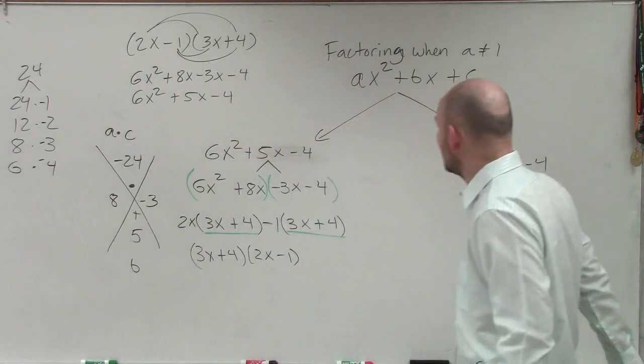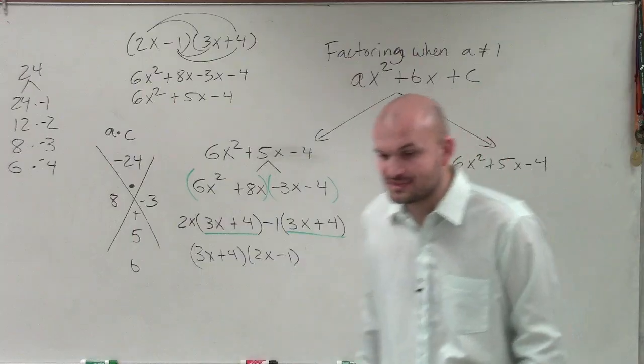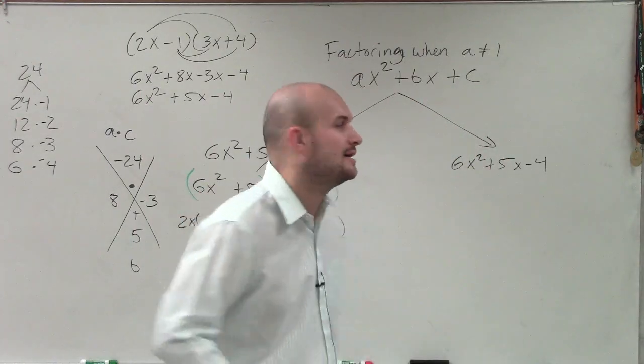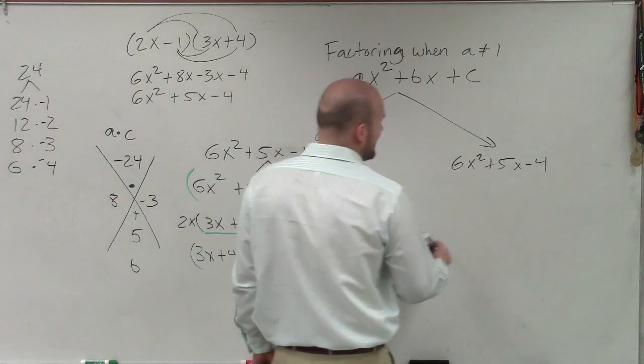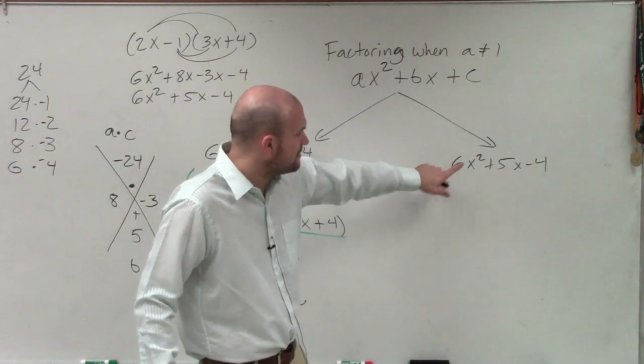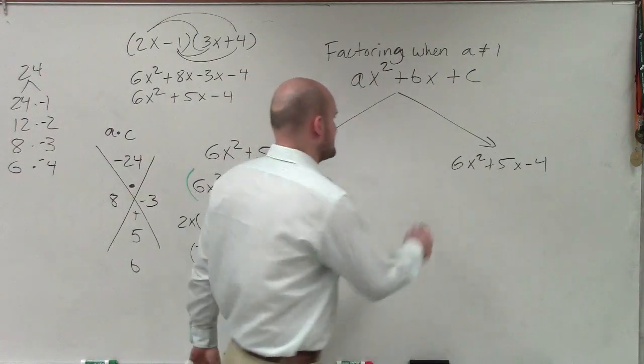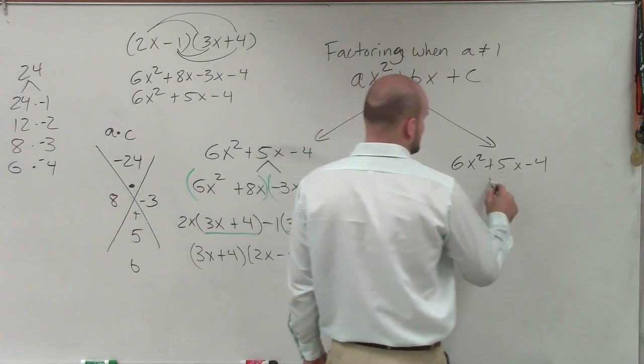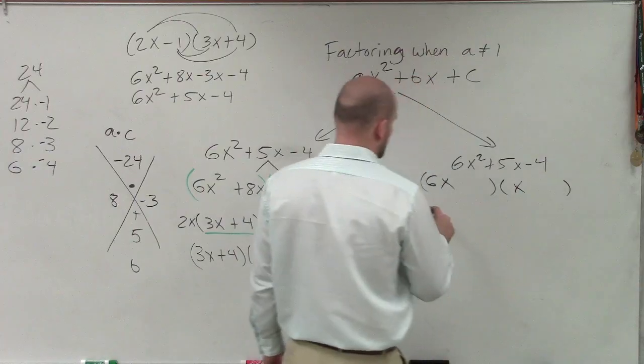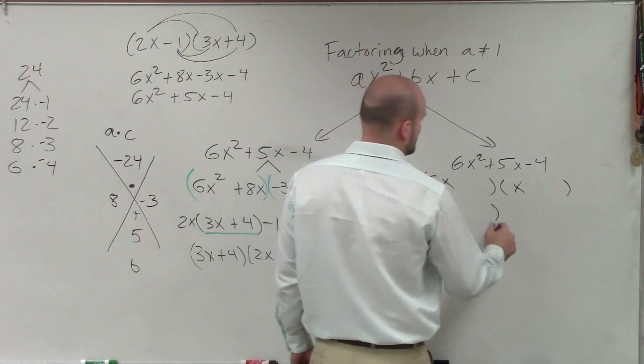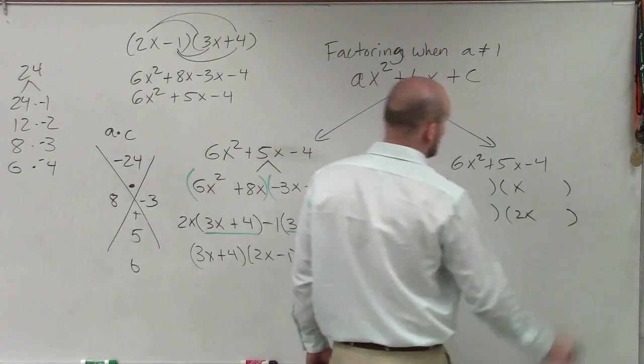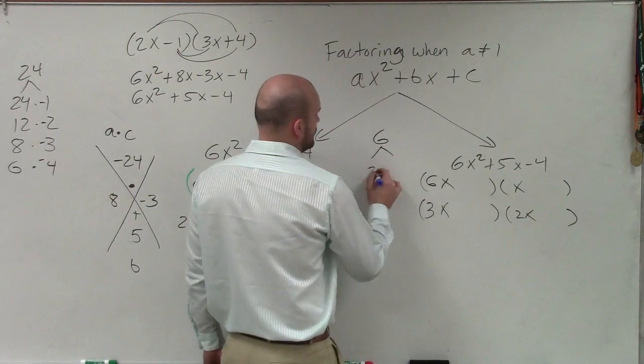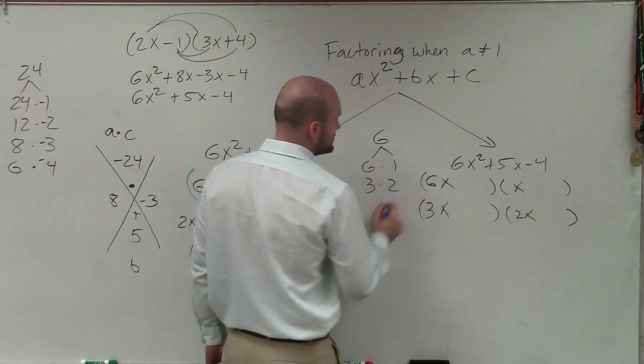So the next method I'm going to show you is kind of a little bit different. And this one is going to be concerned with just kind of doing it in your head. When doing a problem like this in your head, what we want to do is we need to determine what two values multiply to give us 6. So we know that those values could be 6x times x, or we could do a 3x times 2x. Then what we're going to do, so we break apart the factors of 6, which are 6 times 1 and 3 times 2.